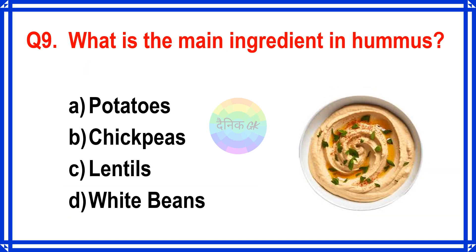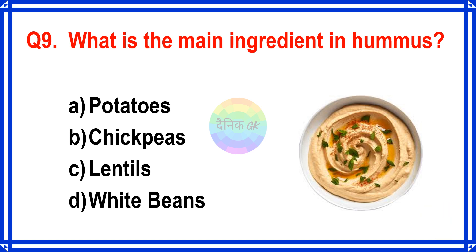What is the main ingredient in hummus? The correct answer is Option B. Chickpeas.